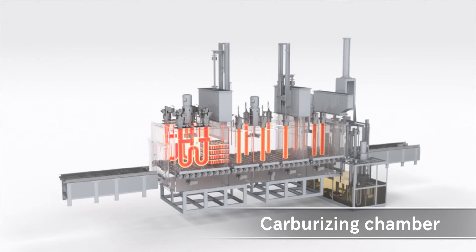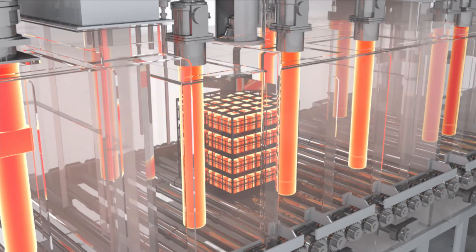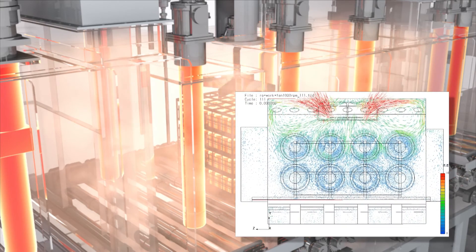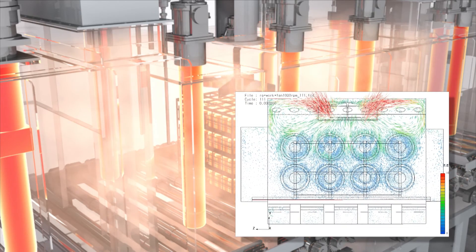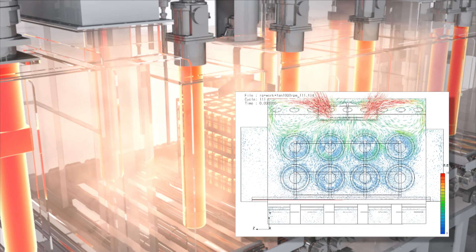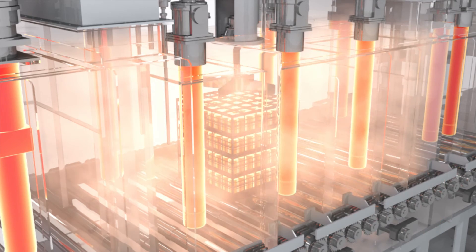After the heating chamber, the product goes to the carburizing chamber. To achieve uniform quality of the product, the system checks in advance the flow and amount of gas inside the furnace by simulation. Based on the data collected by the simulation, the gas nozzle is set to an optimum position.